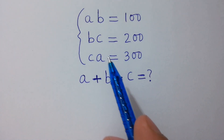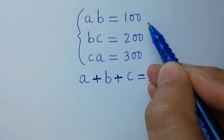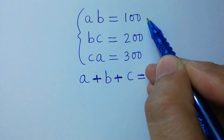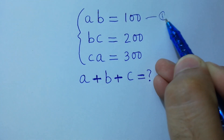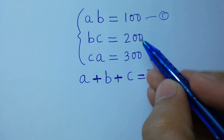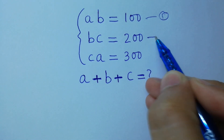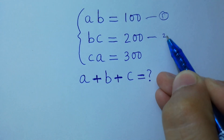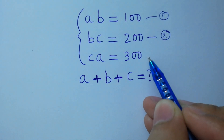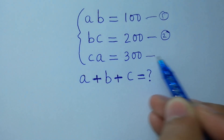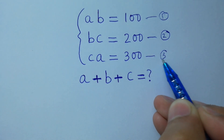Suppose that ab equals 100 is the first equation, bc equals 200 is the second equation, and ca equals 300 is the third equation.